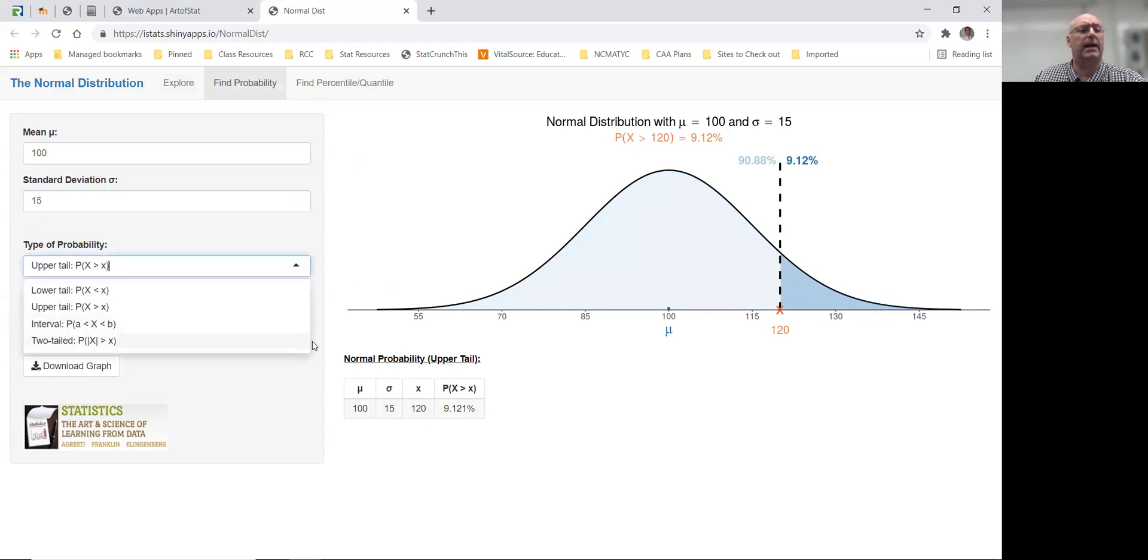As you saw from the drop-down list, you can do a greater than, a less than, or you could do between two values.